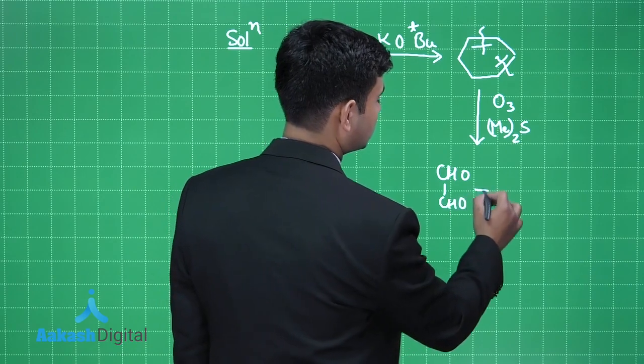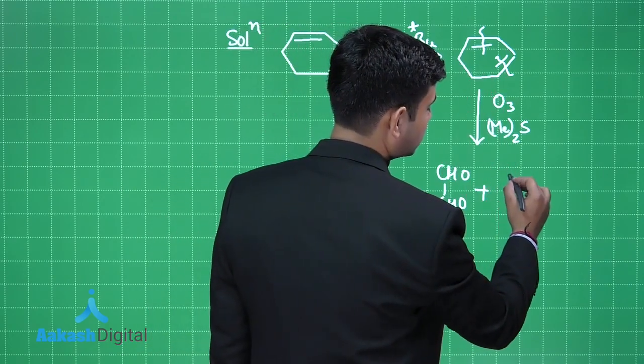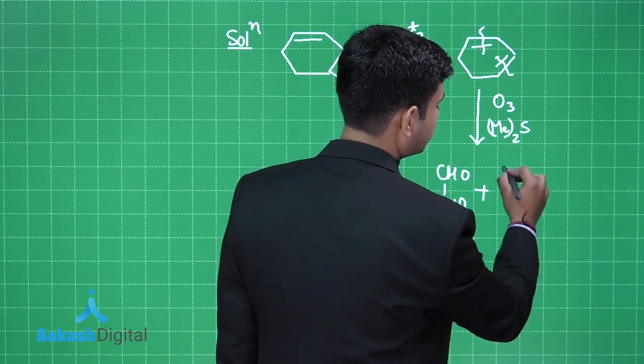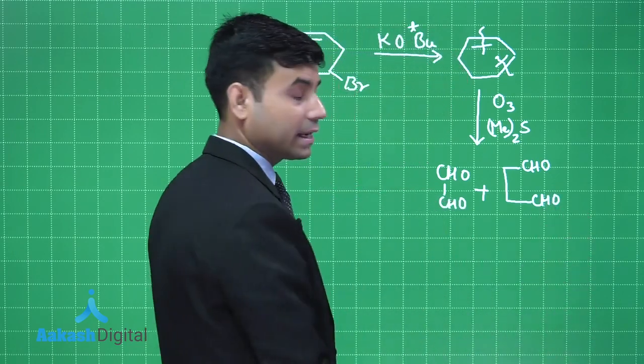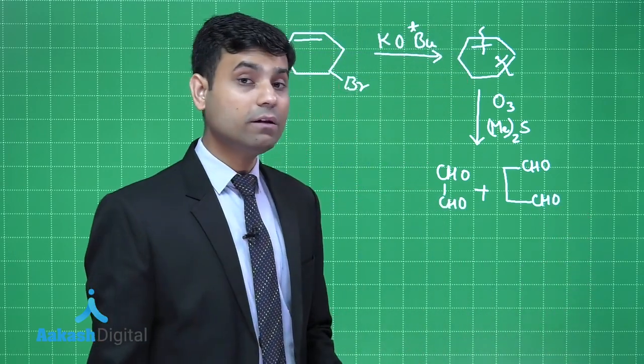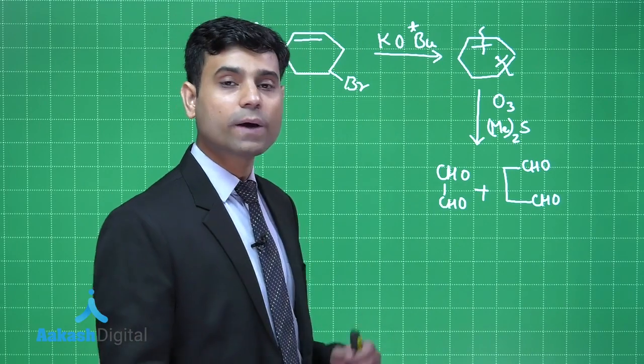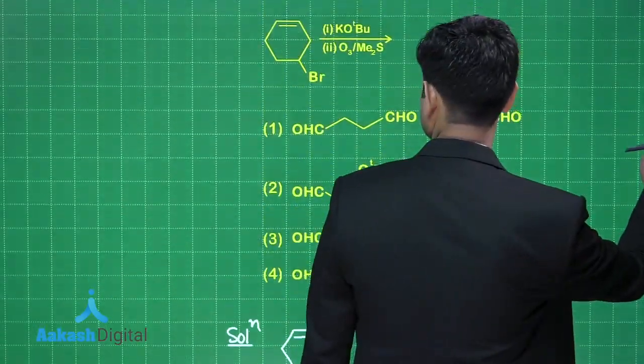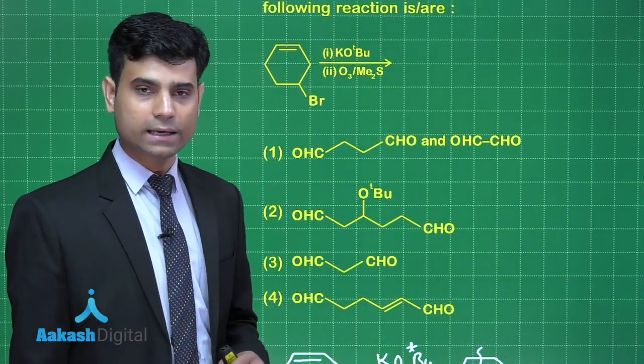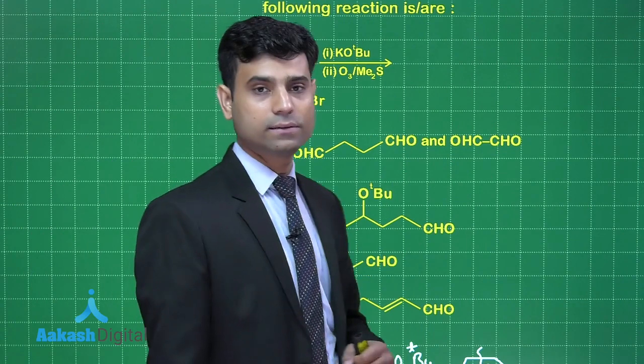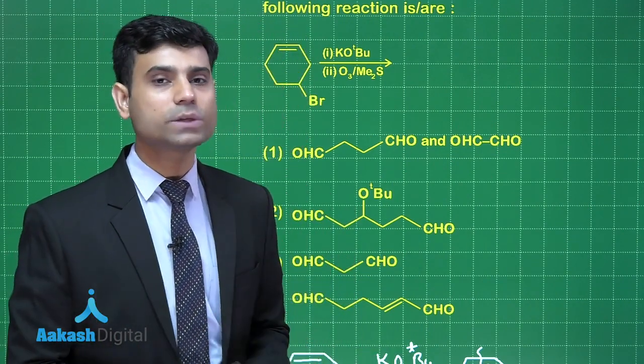So CHO-CHO, that is glyoxal, will be formed plus 1-2-3-4, there are four carbons, we can name it as butane-1,4-dial. Let us go through the options to find the right answer. We can see here this is butane-1,4-dial and this is glyoxal or ethane-1,2-dial. So the correct answer is given in option 1. Hence the right answer for this question will be option 1.